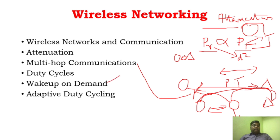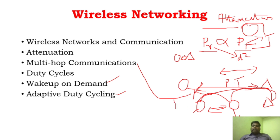A very important technique is wake-up on demand, and another is adaptive duty cycling. Wake-up on demand means the sensor node is not only going to sleep mode, but it should be aware of when it should wake up. This particular sensor will have two radios — one lower energy radio and one higher energy radio. The lower energy radio is used to receive the wake-up signal. Whenever it receives the wake-up signal, it wakes up, and the higher energy radio becomes active to transmit data. The low energy radio is only used to receive wake-up signals.